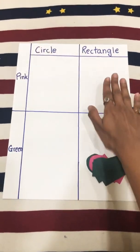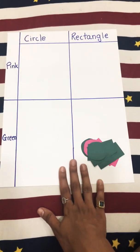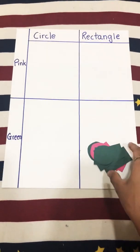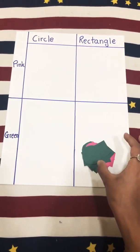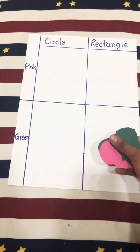A Carroll diagram is represented somewhat like this. It is used to sort data into groups. Let's try with an example.